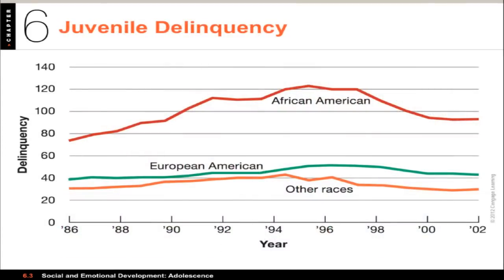Speaking of problematic behaviors, we can look at juvenile delinquency. Children or adolescents who engage in illegal activities and come into contact with the criminal justice system are what we mean by juvenile delinquents. Criminal and antisocial behavior increases in adolescence, then decreases in adulthood. There have also been important changes over time, with rates rising during the 1990s but going down over time, so that by the 2000s the rate becomes lower.